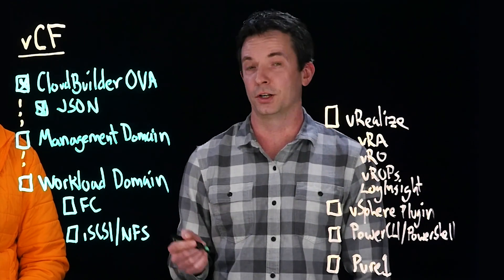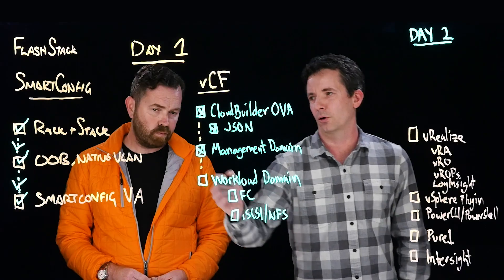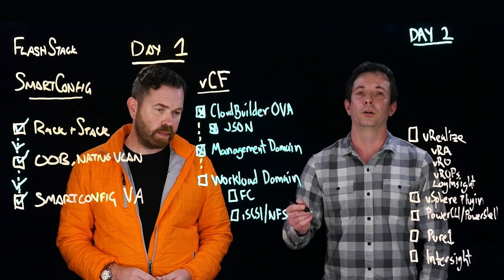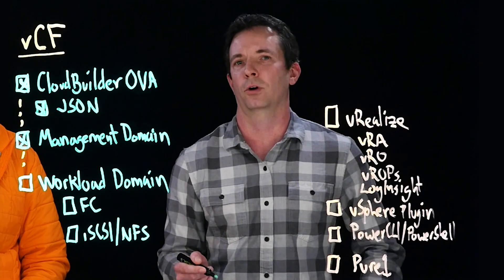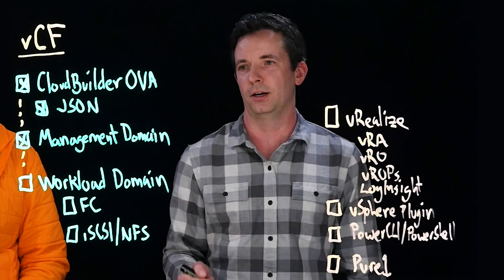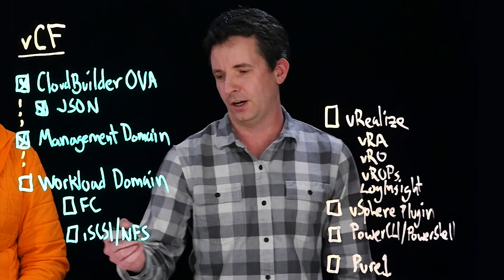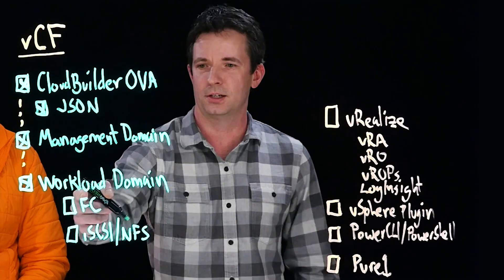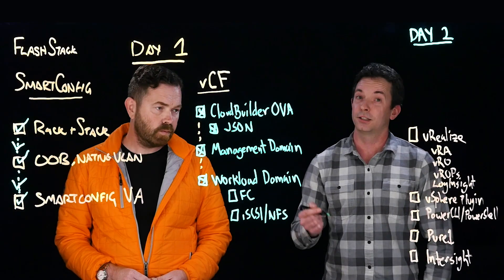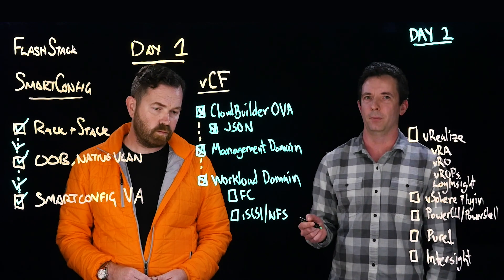VMware Cloud Foundation runs on top of vSAN. Once that management domain has been stood up — a minimum of four ESXi hosts with vSAN included — you're free to start deploying workload domains. Workload domains are where Pure Storage has a lot more direct integration. In their 3.9.0 release of VMware Cloud Foundation, VMware has given you the ability to natively add Fibre Channel external storage arrays to your workload domains as you deploy them.